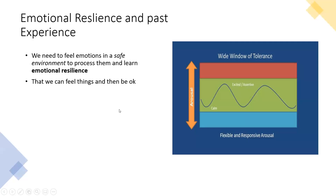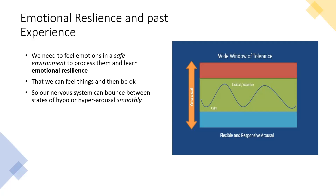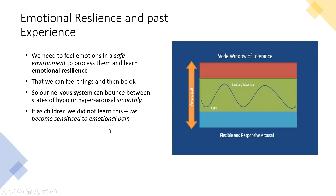We need to learn that we can both feel things and then be okay — we can process an emotion without being overwhelmed by it. Overwhelm is the absolute marker of trauma: it's not having emotions that creates trauma, it's being overwhelmed by them. Our nervous systems need to actively learn to bounce between states in a smooth, fluid variability. If as children we did not learn this — especially if we didn't see it modeled — we learn to avoid our pain and become sensitized to emotional pain.